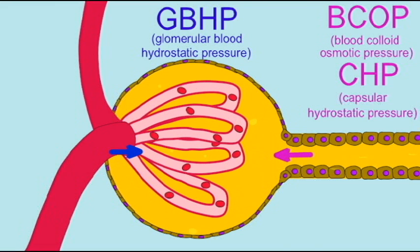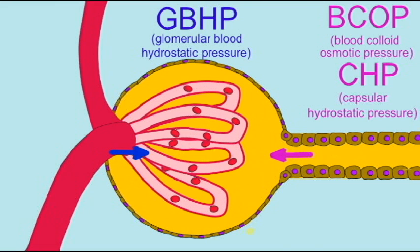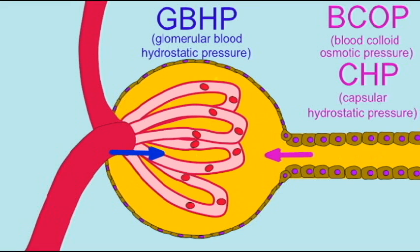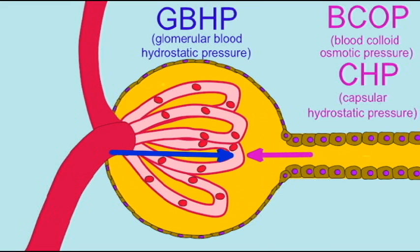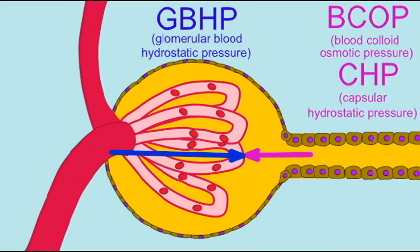If, however, the two resisting forces exceed the blood pressure, then there will be no filtrate formed, and thus no urine will be made.